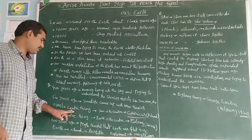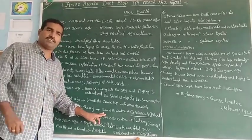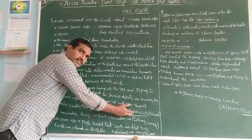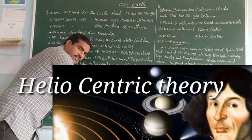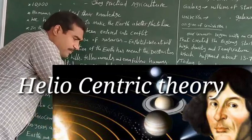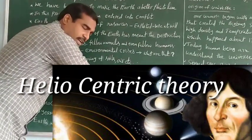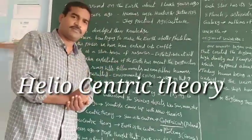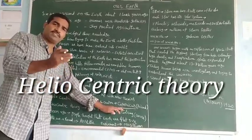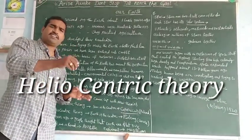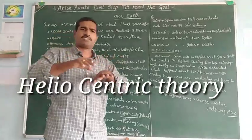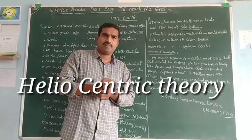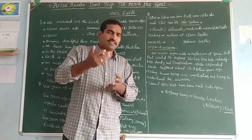The first one is the Heliocentric Theory. What is the Heliocentric Theory? Who proposed it? The Heliocentric Theory was proposed by Copernicus. According to this theory, the Sun is the centre of all the other objects in space.